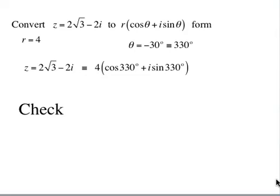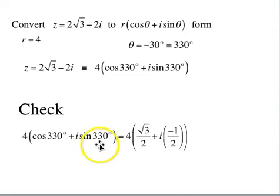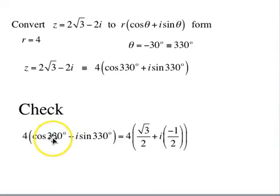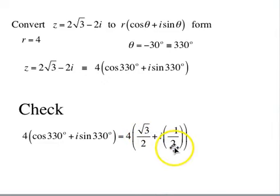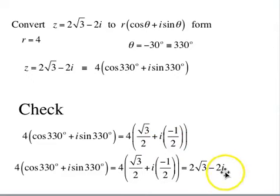Quick check: 4·(cos 330° + i·sin 330°). Cosine in quadrant 4 is positive; cos 330° = √3/2. Sine in quadrant 4 is negative; sin 330° = -1/2. Distributing: 4·(√3/2) = 2√3 and 4·(-1/2) = -2, giving 2√3 - 2i — which is exactly what we started with. That concludes this lesson.